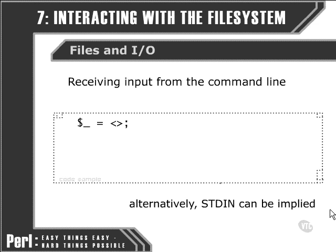That's because STDIN and STDOUT are both the default input and output file handles. So here we're setting the default scalar variable, $_, to the line from the default input file handle.